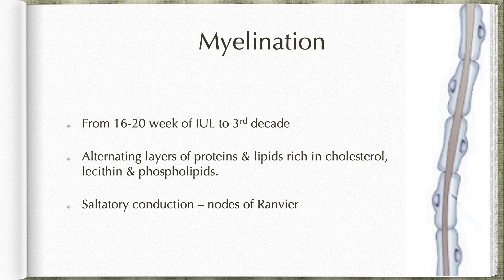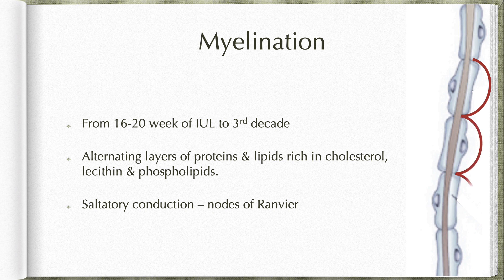Myelination begins at about 16 to 20 weeks of intrauterine life but continues for different periods in different areas of the brain and peripheral nervous system. The pyramidal tract completes its myelination in about two years, whereas certain areas in the prefrontal cortex take up to the third decade of life. Myelin is made up of alternating layers of proteins and lipids rich in cholesterol, lecithin, and phospholipids. This myelination, in addition to acting as an insulating material around the axon, helps in faster conduction by means of saltatory conduction, wherein the impulse jumps from one node of Ranvier to the next.